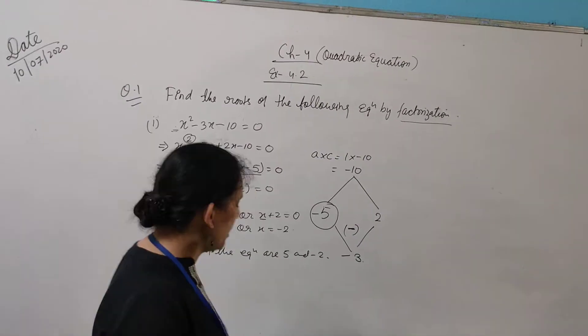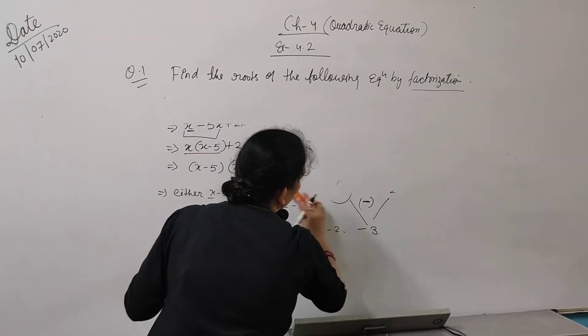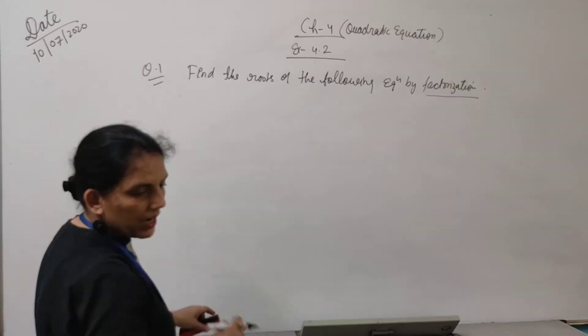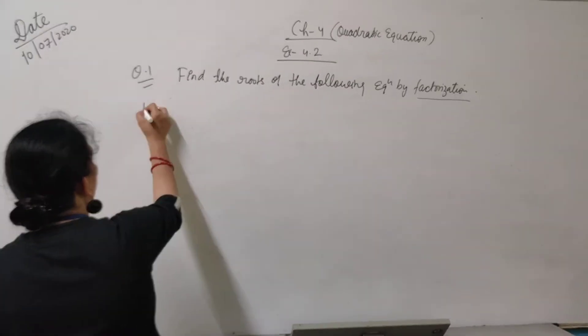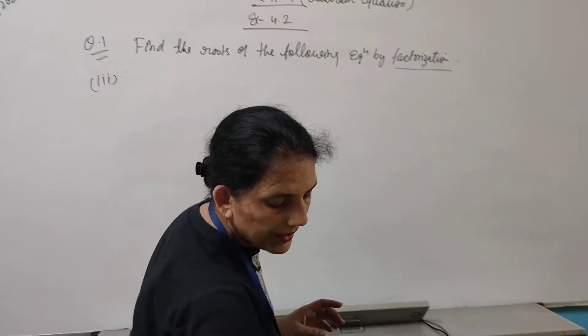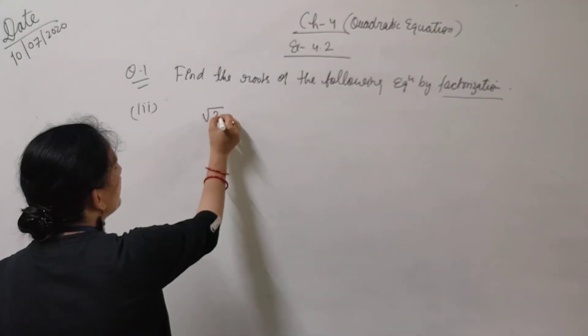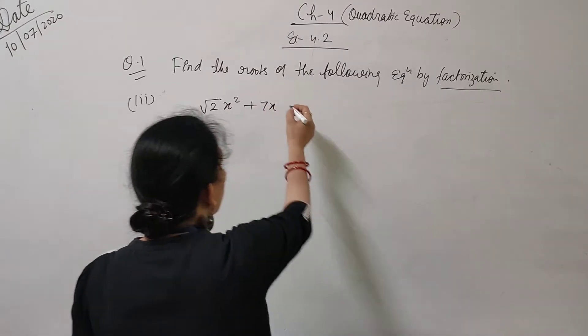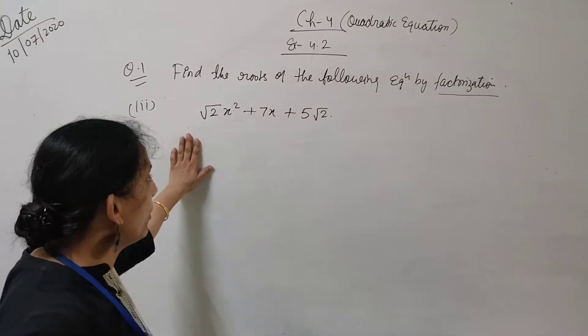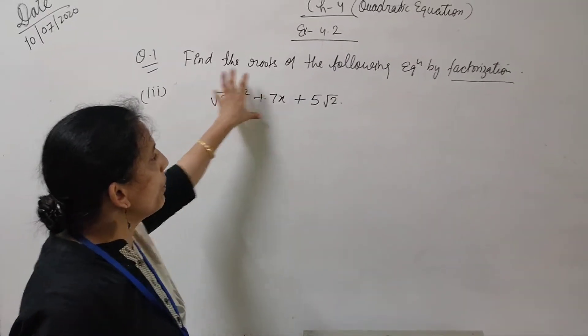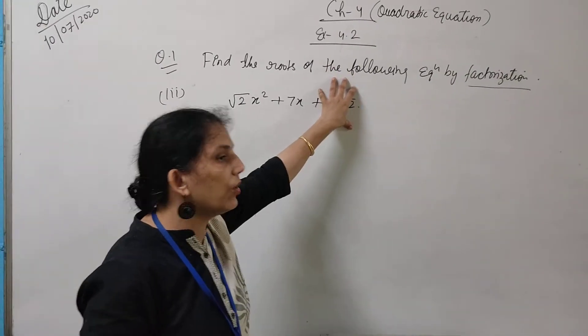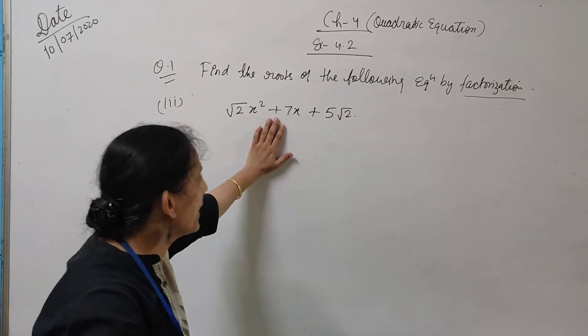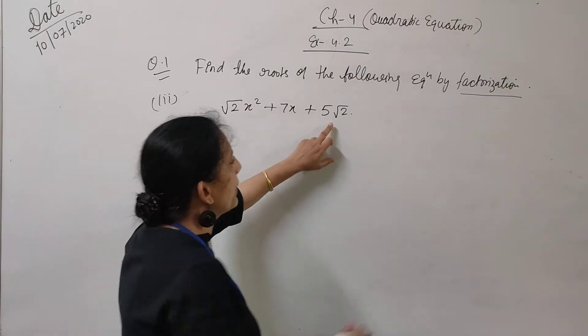Now second part is very easy, so I am giving it as homework. Coming to next part in which you can face the difficulty. Although I know everybody is very smart, so I am going with third part. Third part is √2x² + 7x + 5√2 = 0. Again you can see here positive and you can see positive. So if both are positive, then whichever sum has come - what are the factors whose sum is 7?